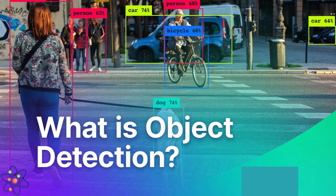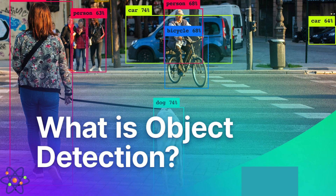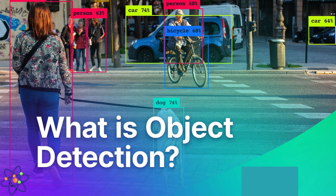Object detection goes beyond recognition by not only identifying objects but also locating their positions in an image. It involves drawing bounding boxes around detected objects. Object detection is critical in scenarios where multiple objects of interest may be present in an image, with applications including video surveillance, self-driving cars, and image annotation.